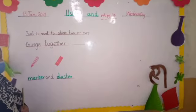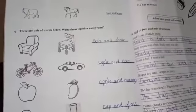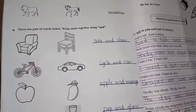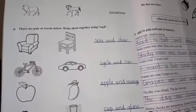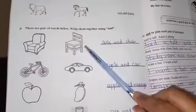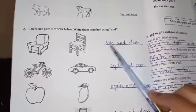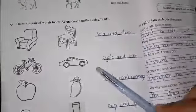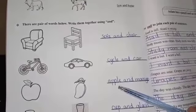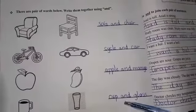On the next page we will join two sentences with 'and'. Students, here you are looking at two pictures and you have to join these two picture names with 'and'. In the first picture there is a sofa and chair. You have to write the names of these pictures and join them with 'and'. Sofa and chair. The next one is cycle and car. The next is apple and mango. The next one is cup and glass.